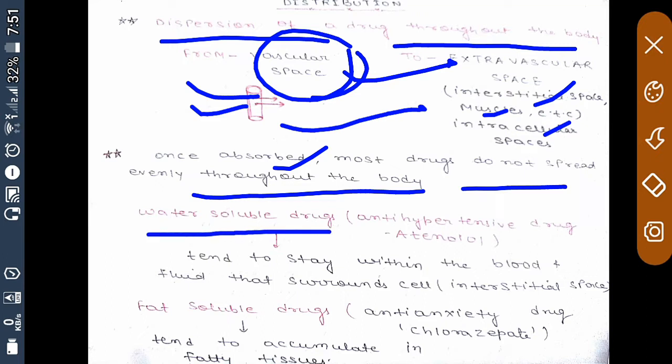Water-soluble drugs tend to stay within the blood and fluid that surrounds the cell. That is, water-soluble drugs tend to stay within the blood or interstitial space wherever water or fluid is present.